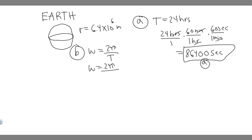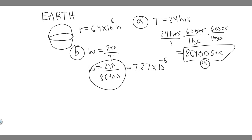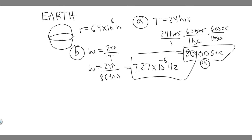All we have to do is plug in the period: 2 pi over T, which is 86,400. So 2 times pi divided by 86,400. When you go ahead and do this, you're going to get 7.27 times 10 to the minus 5. So 7.27 times 10 to the minus 5 — and this is measured in radians per second. So 7.27 times 10 to the minus 5 radians per second is going to be the angular velocity.